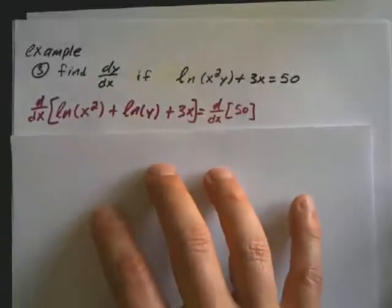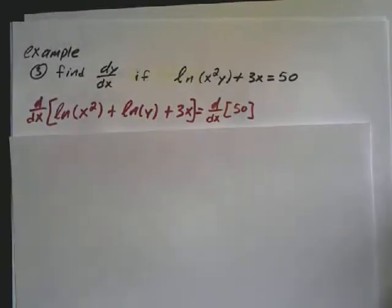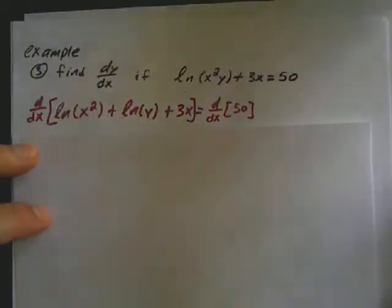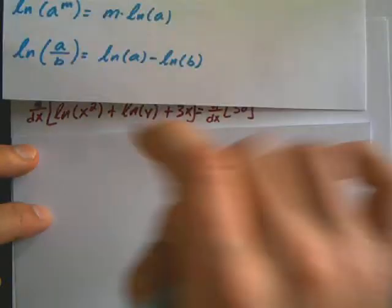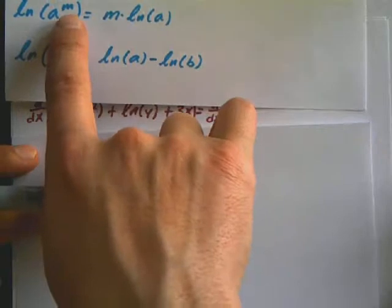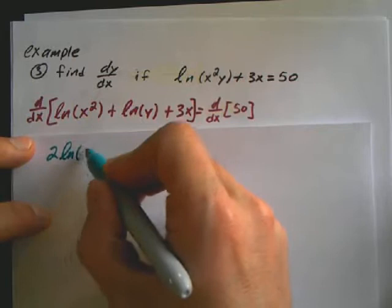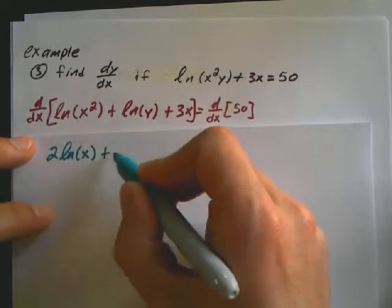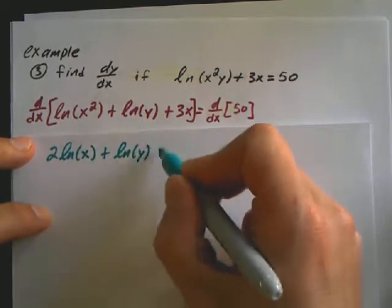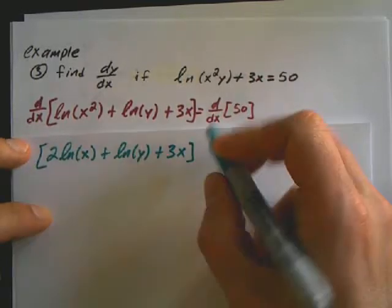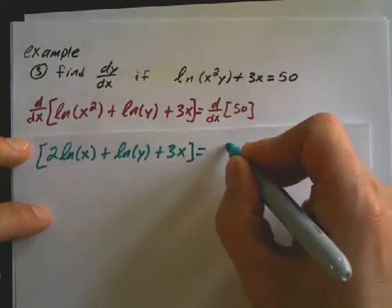What I mean by that is, I could have simplified this even further by doing the exponent property. So this is ln of x squared. I can bring this exponent, this squared, in front. And I could have wrote this as 2 ln of x plus ln y plus 3x, and then 50.